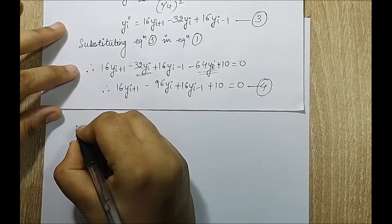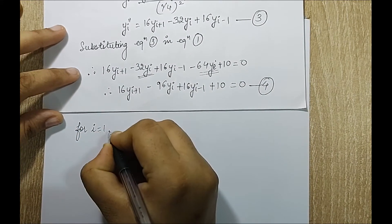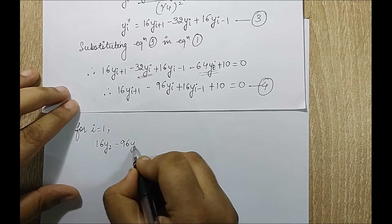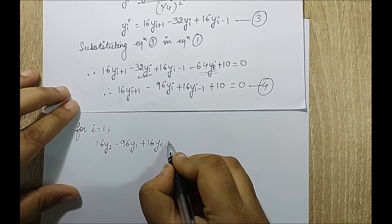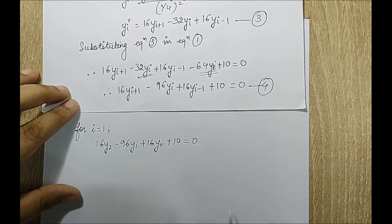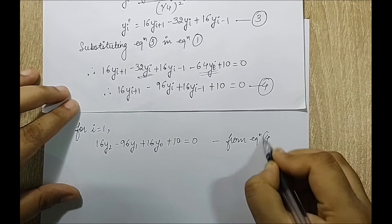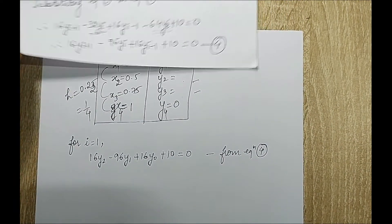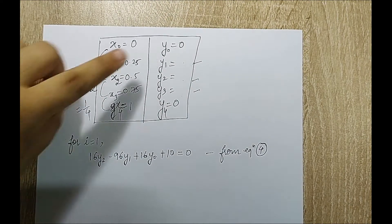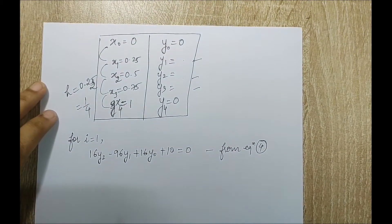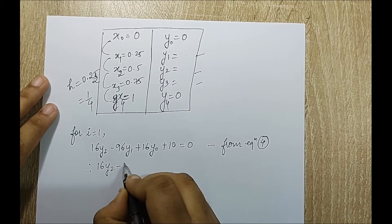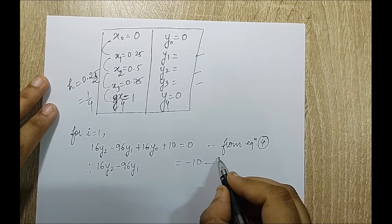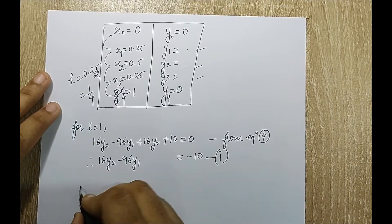For i equal to 1, equation 4 becomes: 16y2 minus 96y1 plus 16y0 plus 10 equals 0. Since y0 is known to be 0, substituting gives: 16y2 minus 96y1 equals minus 10. I mark this as the first equation.